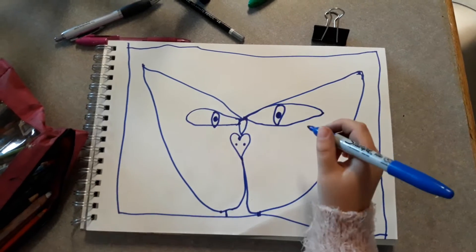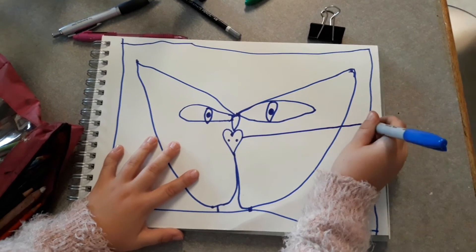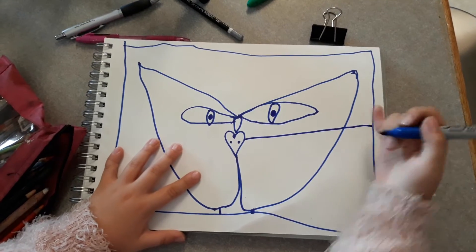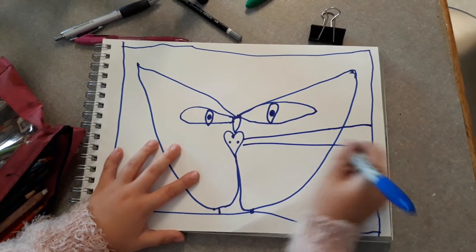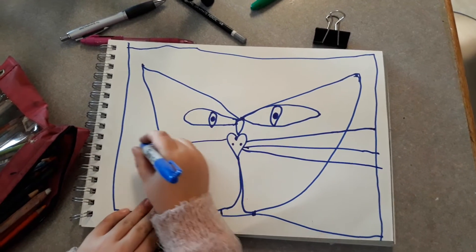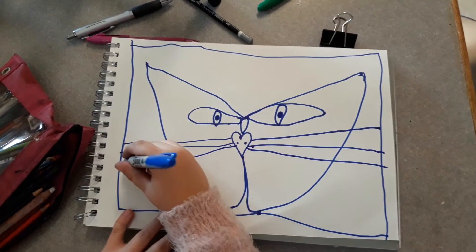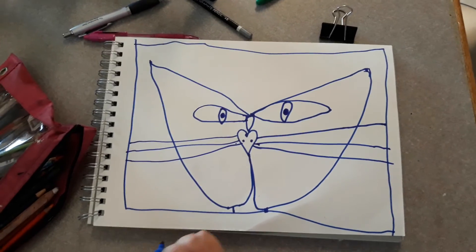Then you want to start here and do one whisker to the frame, two whiskers to the frame, three whiskers to the frame. Then on the other side: one whisker to the frame, two whiskers to the frame, three whiskers to the frame, and you're done.